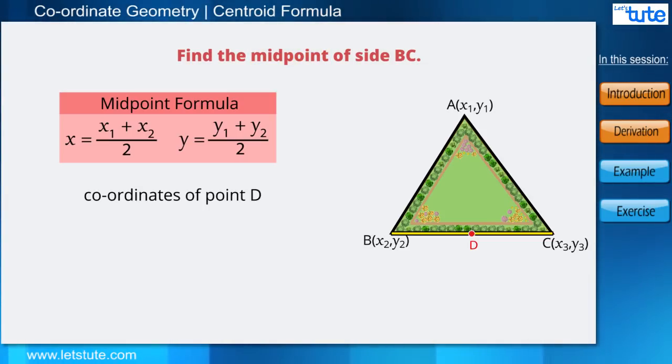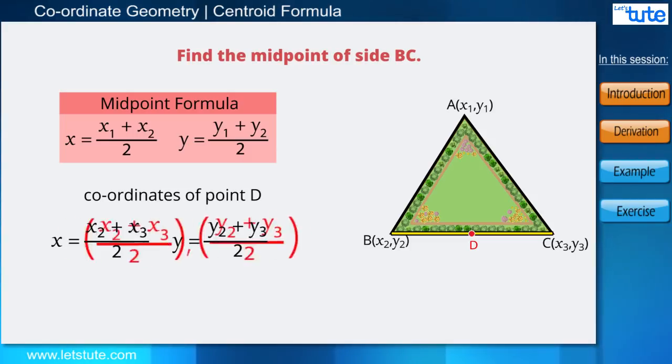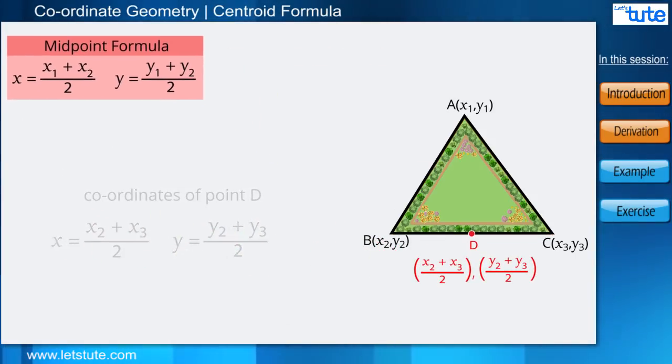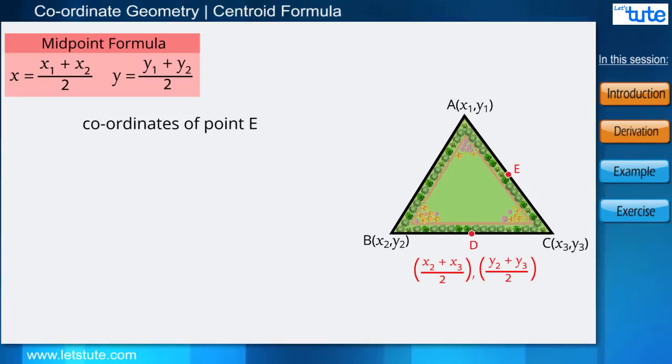Yes, the midpoint formula. We can find the coordinates of point D by putting the values of B and C in the midpoint formula. Therefore, (x2 + x3)/2 and (y2 + y3)/2 are the coordinates of point D. Similarly, we can find coordinates of E and F.